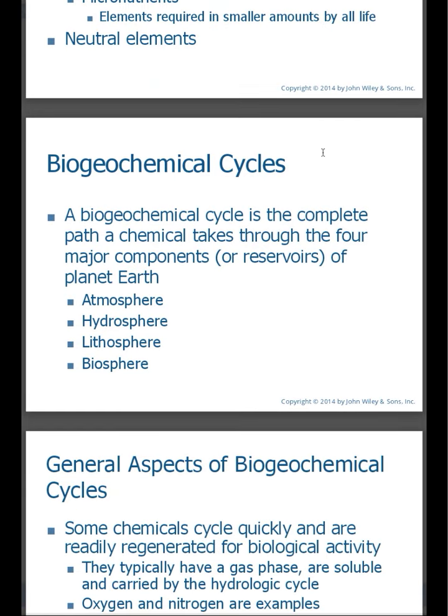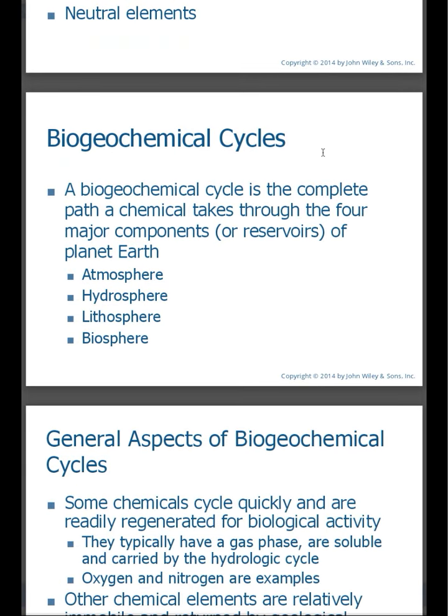Now we finally get to the definition of biogeochemical cycles. It's simply a cycle for chemical elements that moves through the four major reservoirs of planet Earth. We'll look at the atmosphere, the hydrosphere, the lithosphere, and the biosphere.